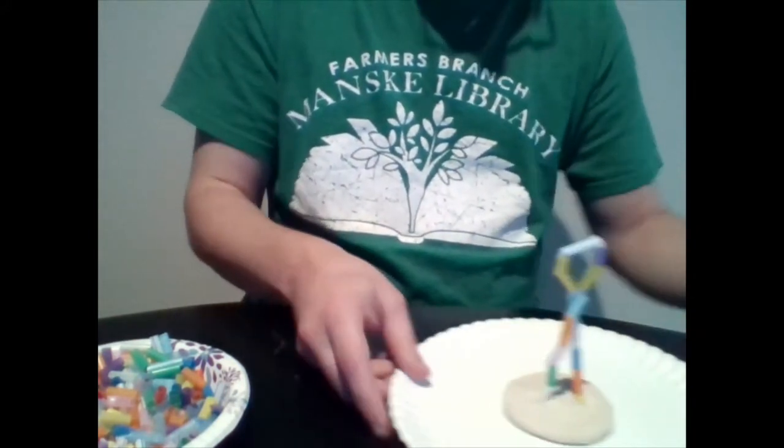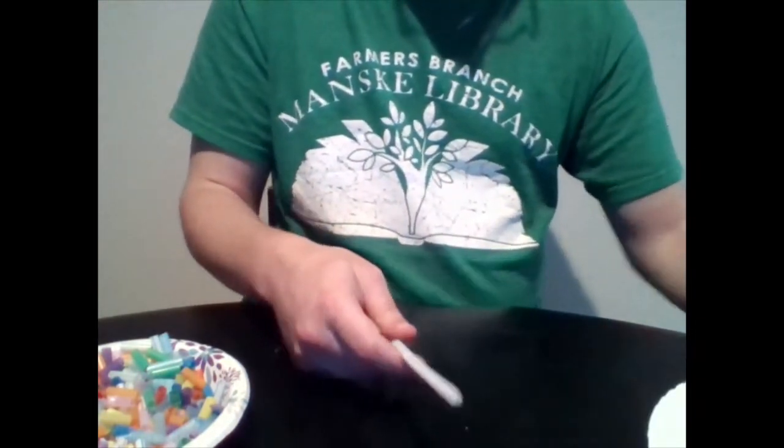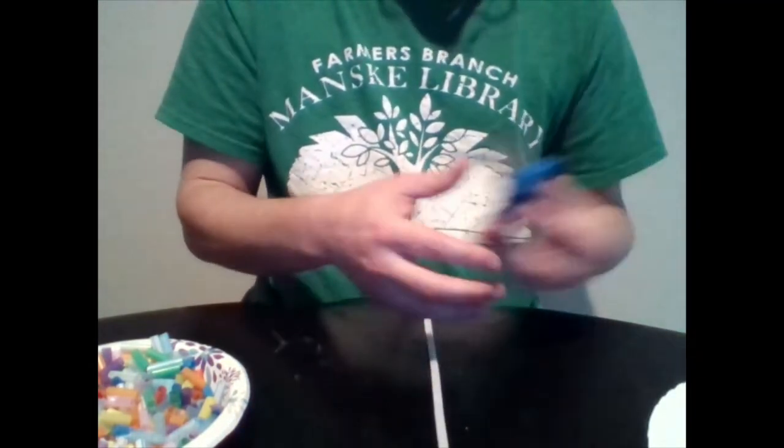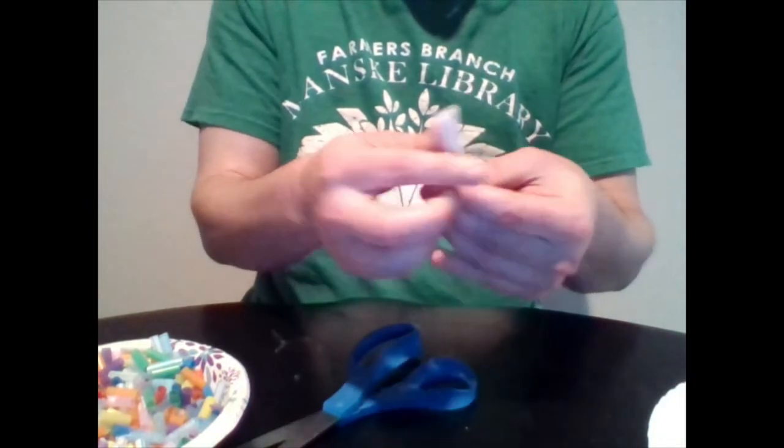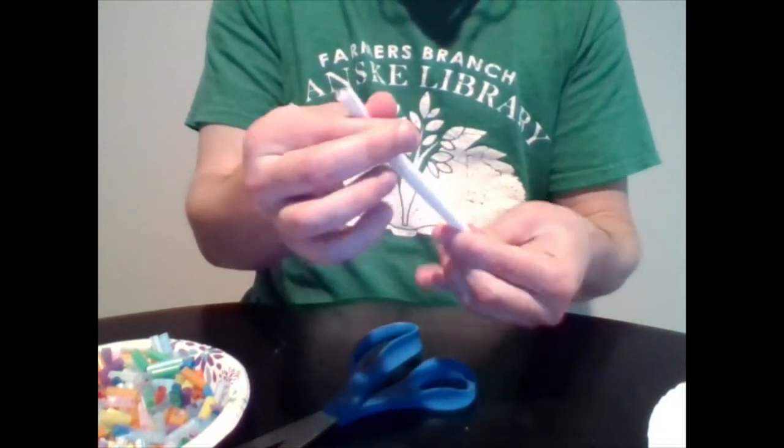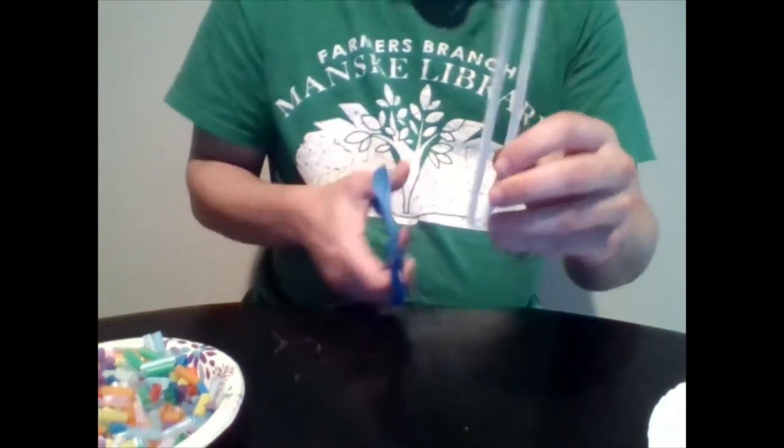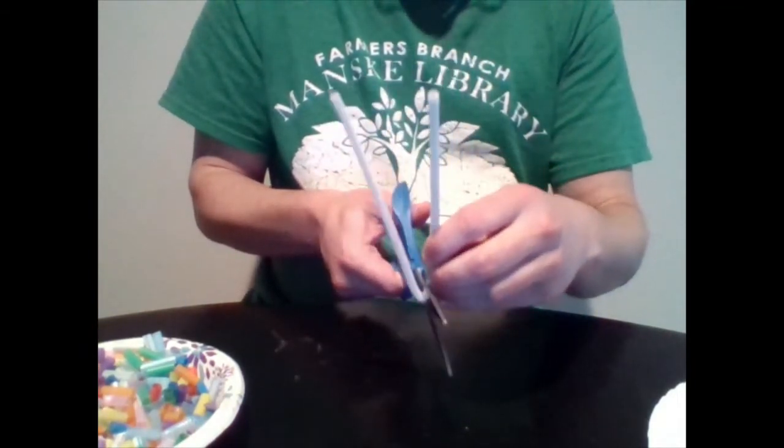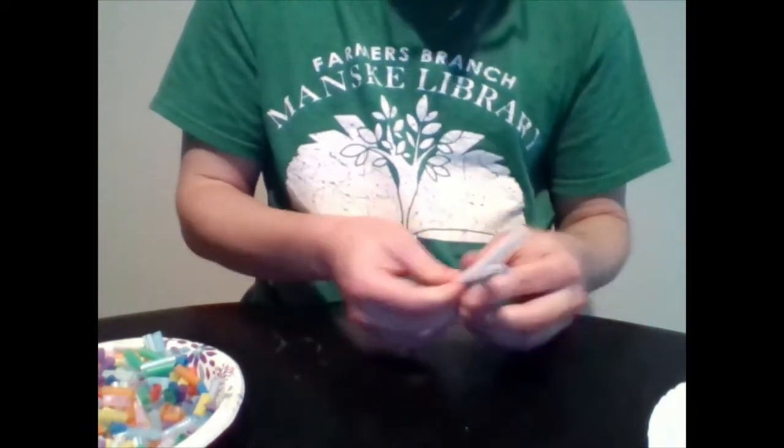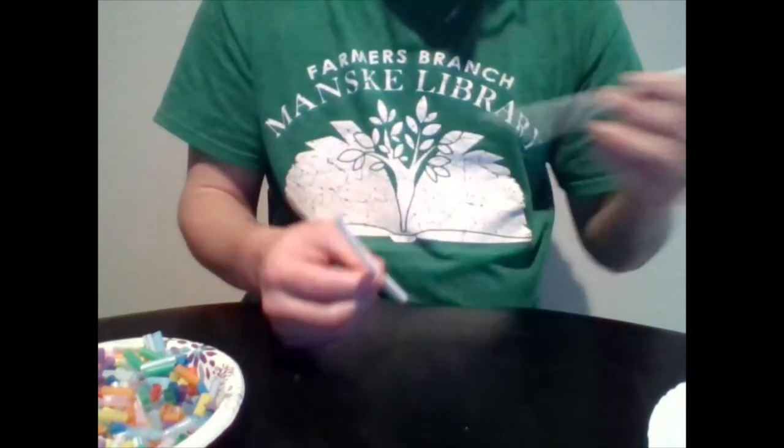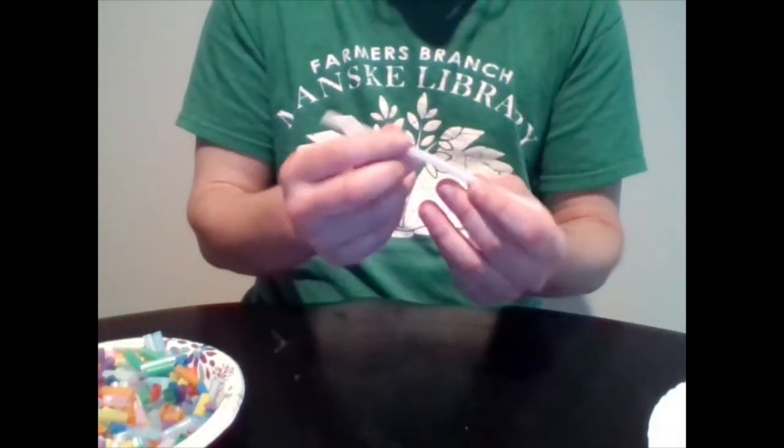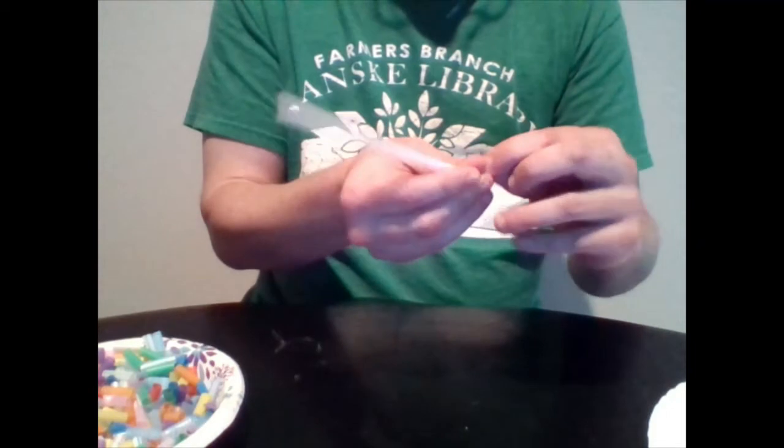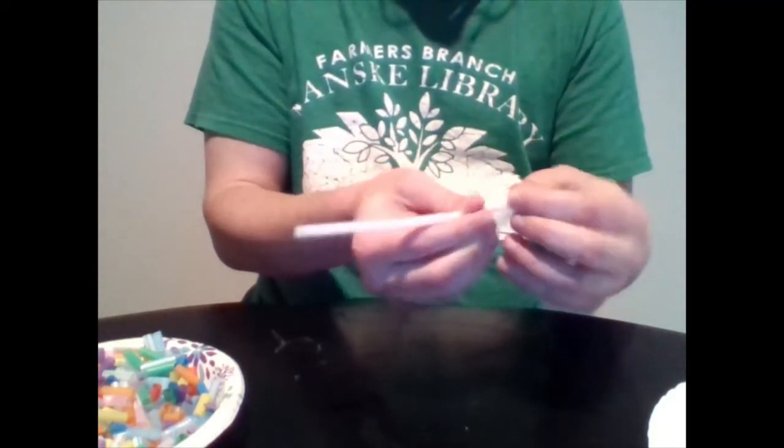Next we're gonna move this off to the side briefly and you want to grab a pair of scissors and you're gonna cut your pipe cleaner into two. First you can bend it in half and then go ahead and cut that. You only need one of these for this particular one so you set one to the side.